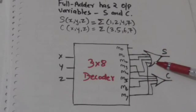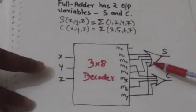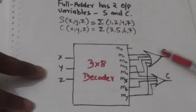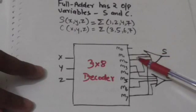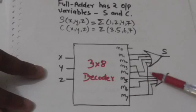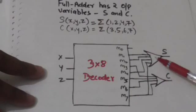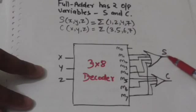The sum of minterms m1, m2, m4, and m7 can be formed by using an OR gate. The inputs of this OR gate would be m1, m2, m4, and m7, and the output of this OR gate would be S.